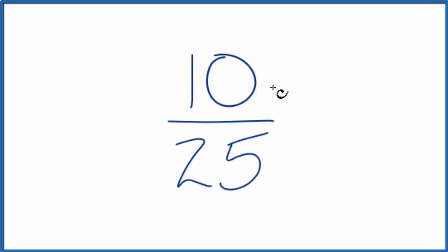When I look at 10 and 25, I'm trying to find a common factor that goes into both 10 and 25 evenly. I know that 5 will go into 10 and will go into 25, so that's a common factor.